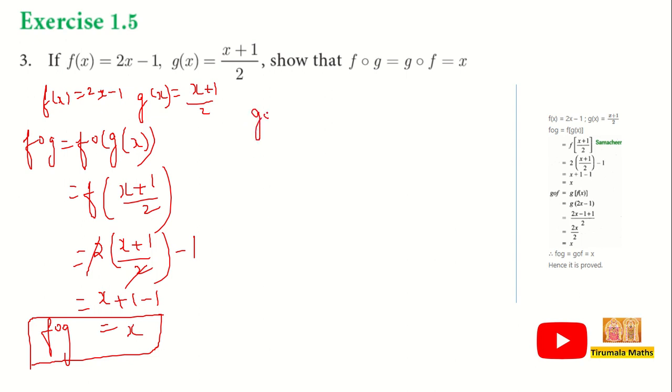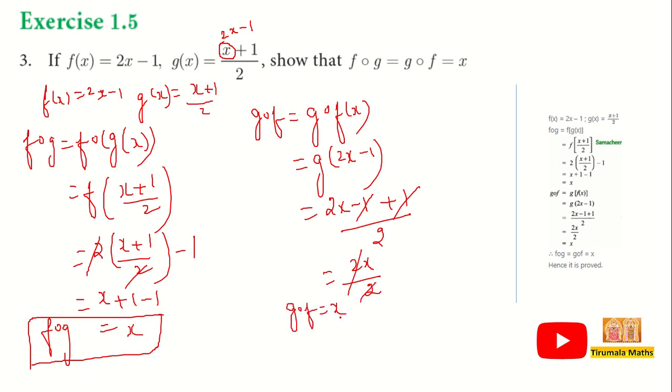So, let us go to g of f. g of f is equal to g of f of x, which equals g of 2x minus 1. In g of x, x is replaced by 2x minus 1. So, 2x minus 1 plus 1 divided by 2. 2x minus 1 plus 1 cancel. 2x by 2, x and 2 cancel. Therefore, g of f is equal to x.